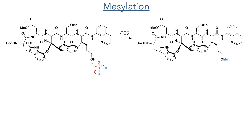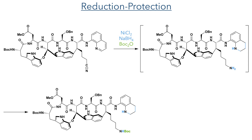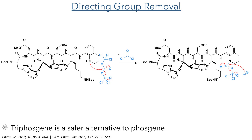This mesylate was reacted with potassium cyanide and tetrabutylammonium hydrogen sulfate to produce a nitrile. A reduction-protection sequence was then carried out on this nitrile. Nickel dichloride was reacted with sodium borohydride to produce nickel boride, which reduced both the nitrile group and also the aminoquinoline ring. The BOC anhydride, also present in this reaction, protected the newly formed primary amine. The reduction of the aminoquinoline ring was quite convenient as it allowed for the removal of the directing group using triphosgene.